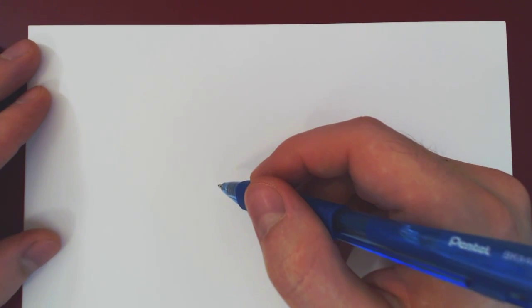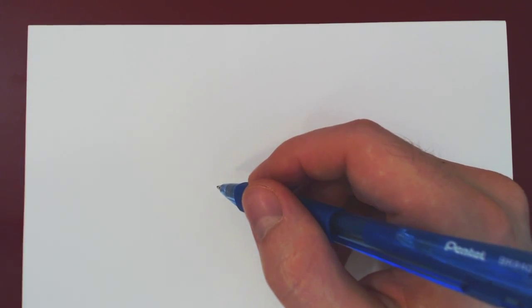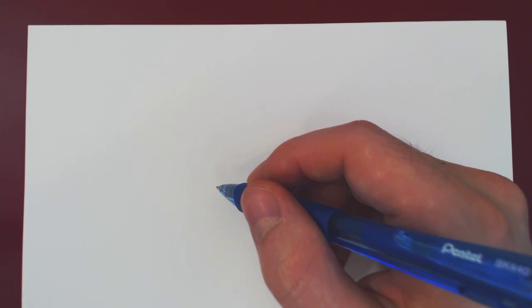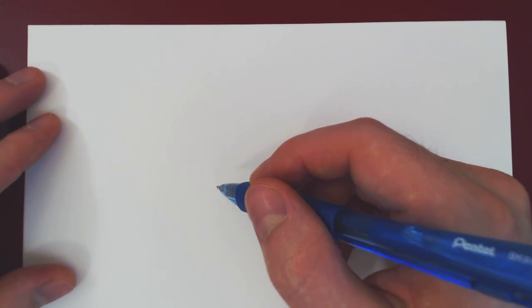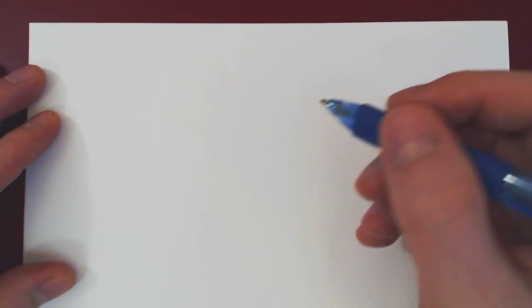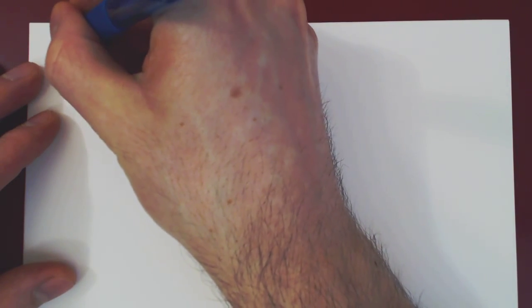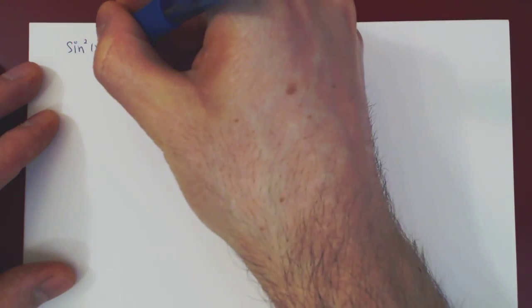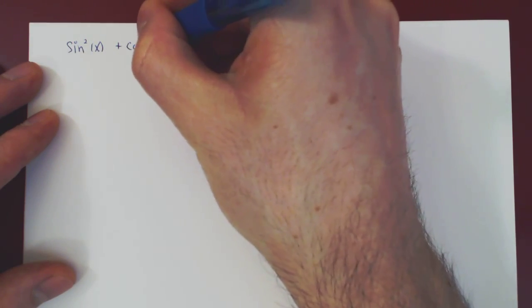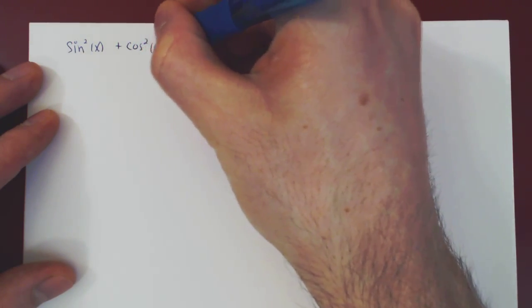In this video, we will consider our first class of trigonometric integrals, namely trigonometric integrals involving sines and cosines with at least one odd power. All we need is the following: the fact that sin²(x) + cos²(x) = 1.